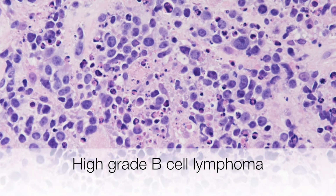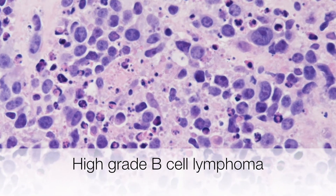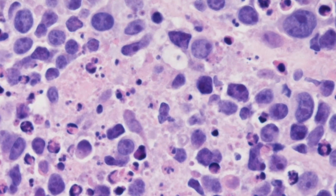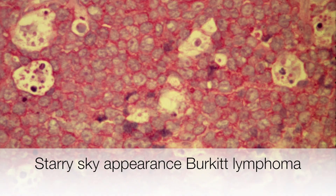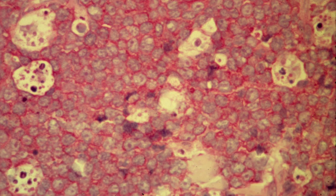This is a section of lymph node from a patient with high-grade B-cell lymphoma, and you can see multiple apoptotic bodies — the scattered dark specks lying amongst the tumour cells. This is a section of another high-grade lymphoma: Burkitt lymphoma. One of the characteristic histological features of Burkitt lymphoma is the so-called starry sky appearance. The stars in the starry sky are caused by apoptosis, and the apoptotic bodies are phagocytosed by macrophages — sometimes called tingible body macrophages because they contain stainable fragments.